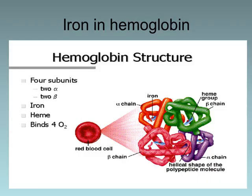This picture shows iron in hemoglobin and the hemoglobin structure. In the red cell we have four hemoglobin chains — two alpha and two beta — with a heme group, and iron binds to four units of oxygen.